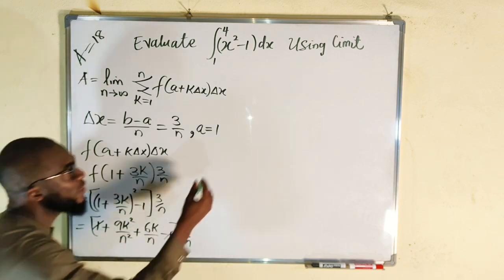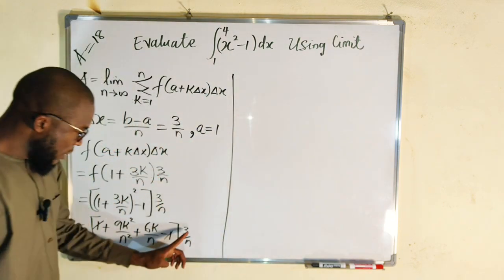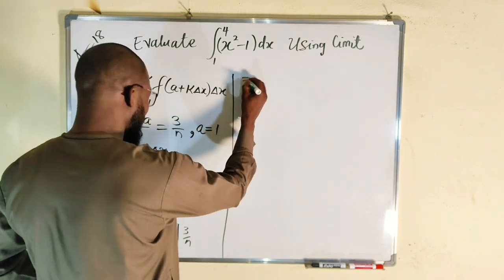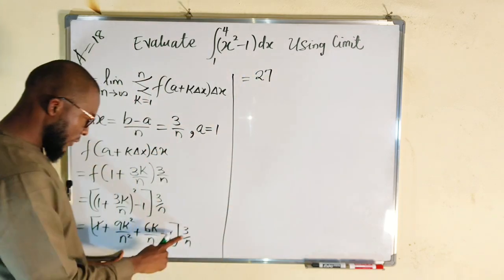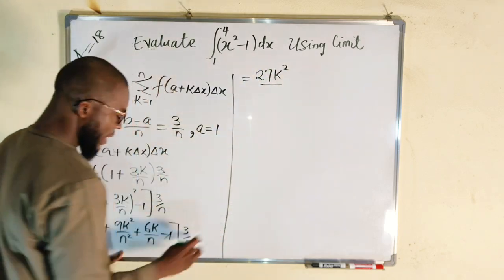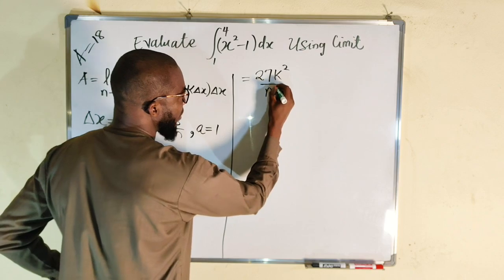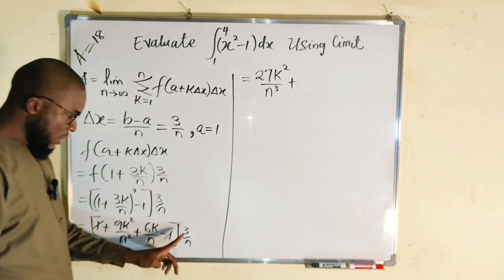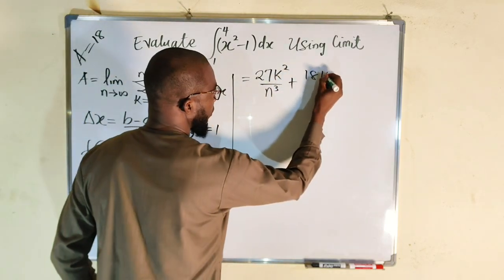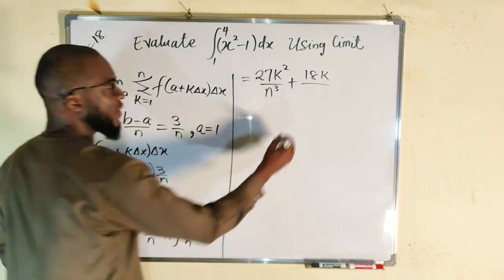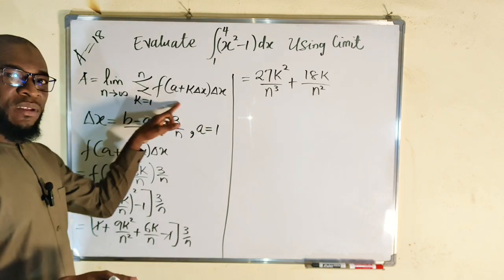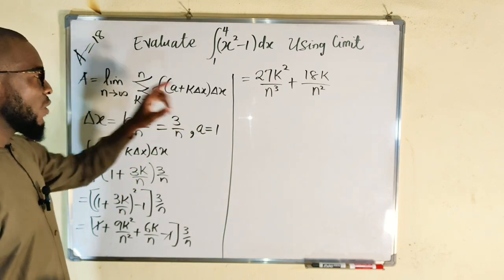Distributing 3 over n: 3 over n times 9k squared over n squared gives 27k squared over n to the third power. The second term: 3 over n times 6k over n gives 18k over n squared. So we have finished simplifying the whole expression — now all we need to do is take the summation.